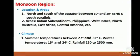Monsoon Region - Location and Areas. Located north and south of the equator between 10 degree and 30 degree north and south parallels. Areas include the Indian subcontinent, Philippines, West Indies, North Australia, East Africa, Central America, etc. What is the climate of this region?